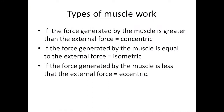The types of muscle work: concentric, isometric, and eccentric. If the force generated by a muscle is greater than the external force, that's concentric — imagine doing a bicep curl, curling the weight up towards your shoulder. If the force is equal to the external force, that's isometric — imagine holding a bicep curl at 90 degrees. If the force generated is less than the external force, that's eccentric — imagine slowly lowering a heavy dumbbell, lengthening the muscle under load.